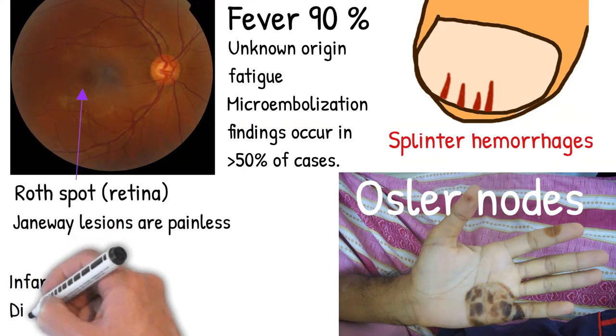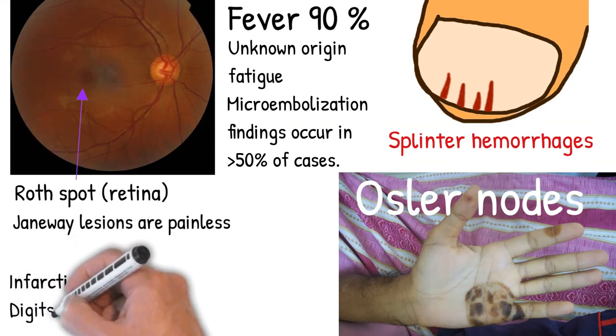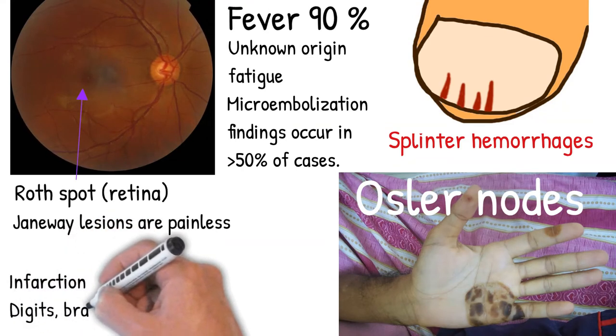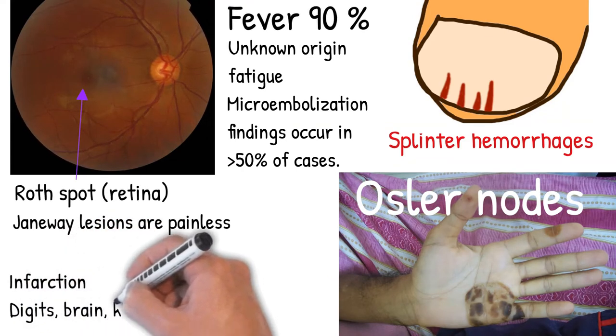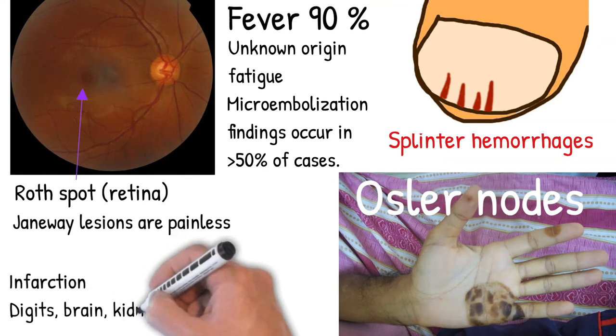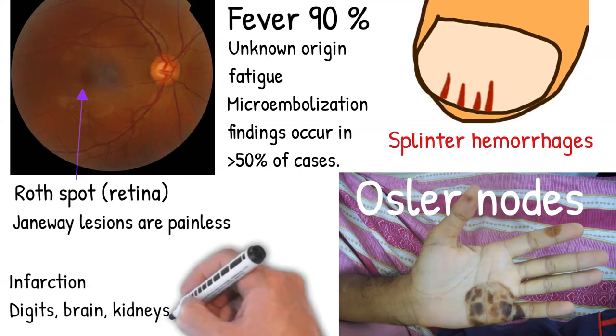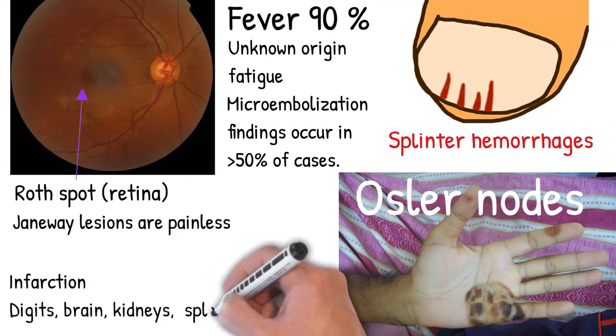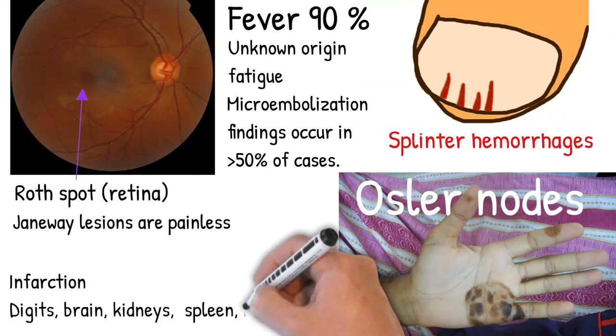Due to septic embolization, resulted infarctions may occur in different tissue sites, for example, digits, brain, kidneys, spleen, and myocardium.